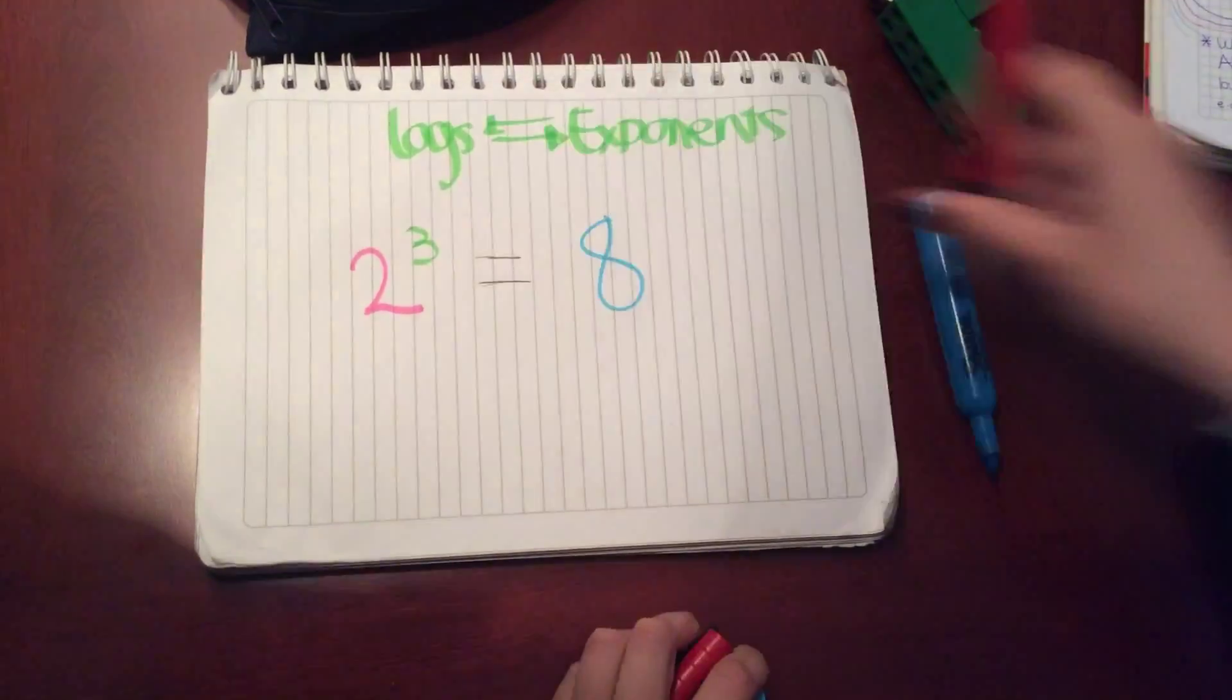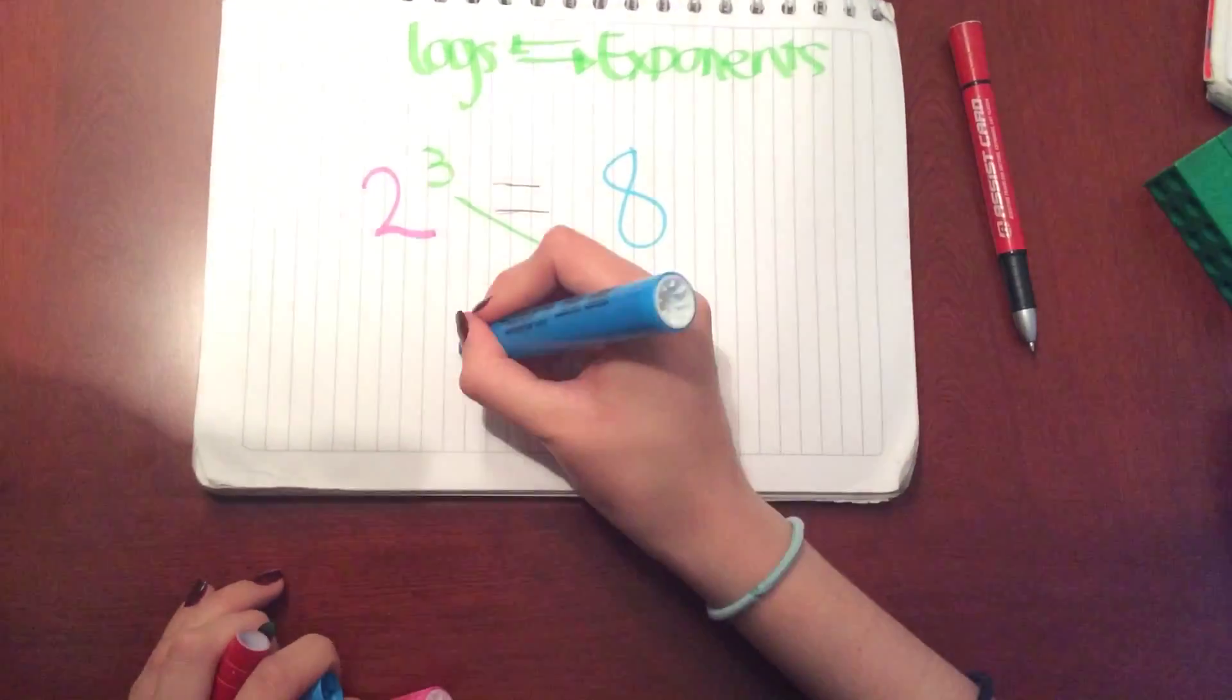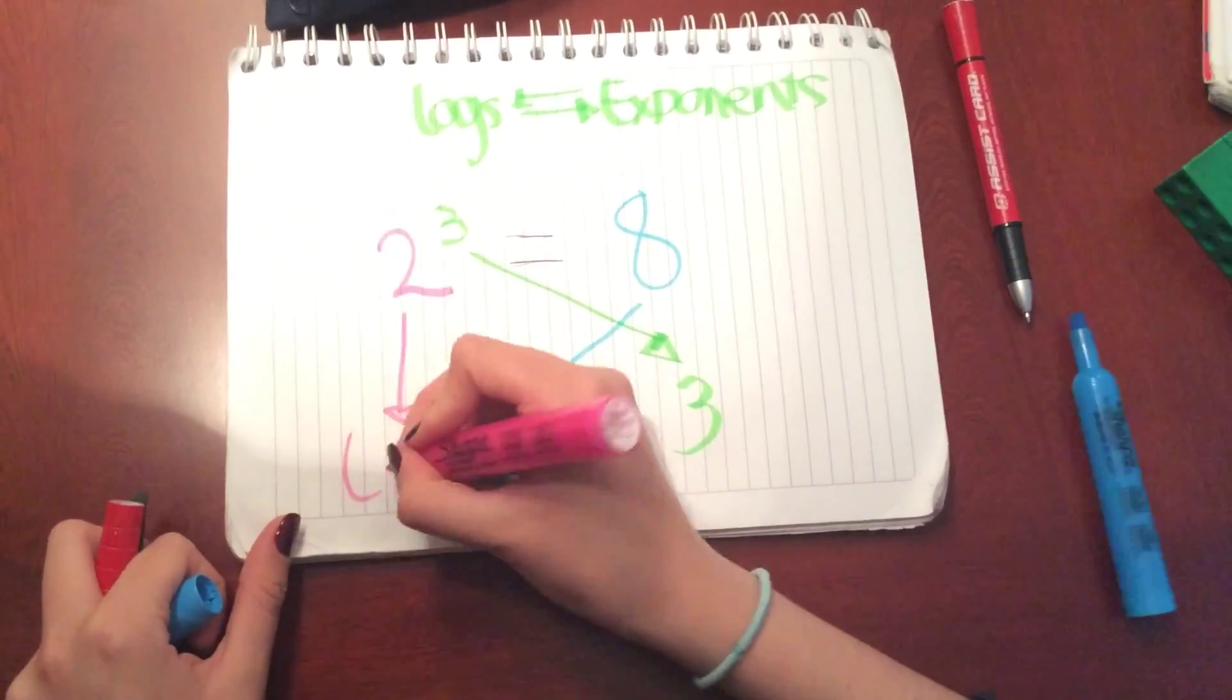So you take the exponent and you take it to the other side. And you take the result and take it to the other side. And then you take 2 and put it as the base of the log.